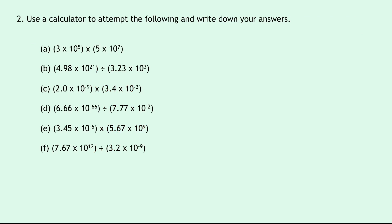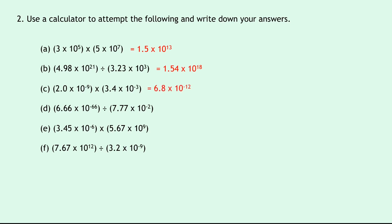Question two says to use a calculator to attempt the following and write down your answers. You'll notice these questions have brackets used in them, and it can be useful to actually use the brackets when inputting numbers into your calculator — that way you don't need to worry about BODMAS or anything like that. For Part A, 3 times 10 to the 5 times 5 times 10 to the 7 gives 1.5 times 10 to the power of 13. For Part B, 4.98 times 10 to the 21 divided by 3.23 times 10 to the 3 gives 1.54 times 10 to the power of 18. For Part C, 2.0 times 10 to the minus 9 times 3.4 times 10 to the minus 3 gives 6.8 times 10 to the power of minus 12.